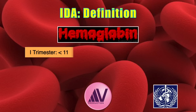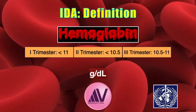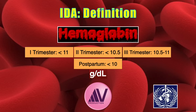In the first trimester, hemoglobin less than 11 g/dL, approximately equivalent to hematocrit less than 33%. In the second trimester, hemoglobin less than 10.5 g/dL, approximate hematocrit less than 31–32%. In the third trimester, hemoglobin 10.5 to 11 g/dL, approximately hematocrit less than 33%. In the postpartum period, it is defined as hemoglobin less than 10 g/dL, approximately hematocrit less than 30%.